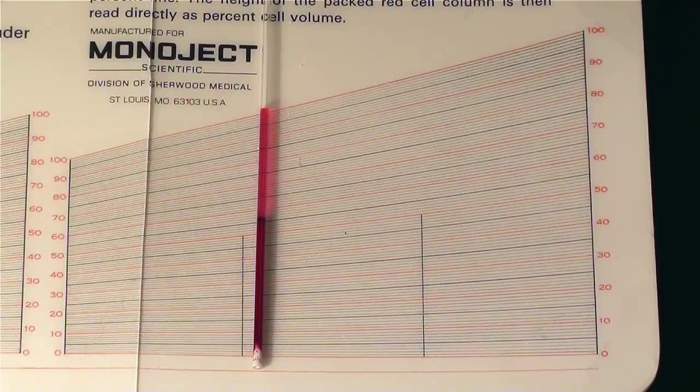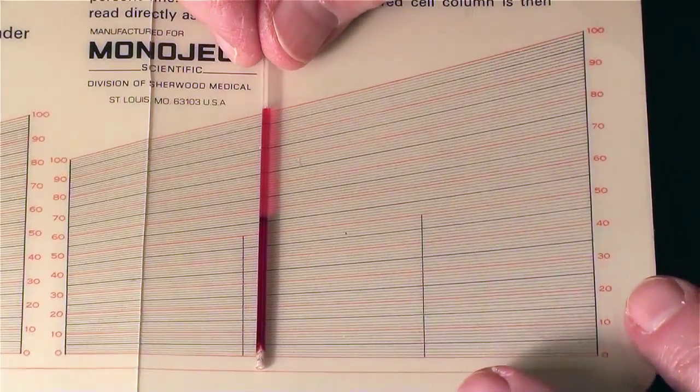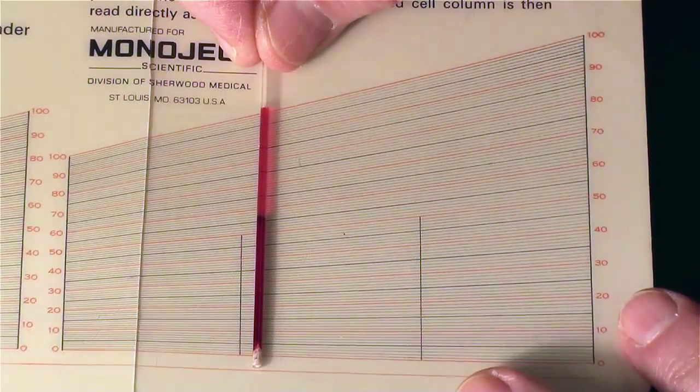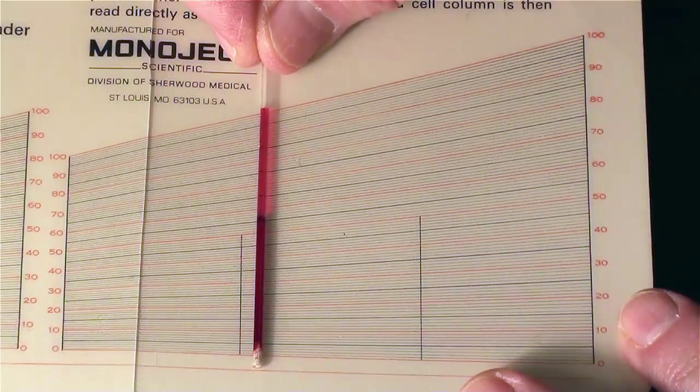Let's take a look at the hematocrit results. The hematocrit tube has been centrifuged. We're now analyzing it with this card.